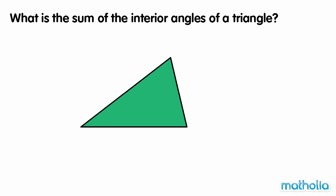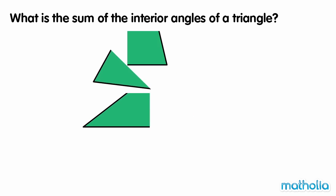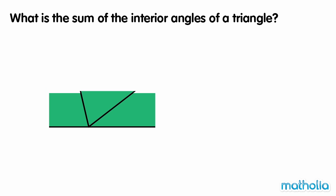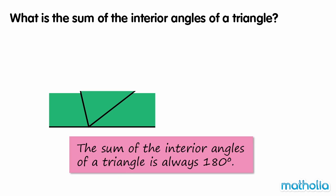What is the sum of the interior angles of a triangle? If we cut a triangle to give one piece for each corner, we can align the corners to form a straight line. Recall that the sum of the angles on a straight line is 180 degrees. Therefore, the sum of the interior angles of a triangle is always 180 degrees.